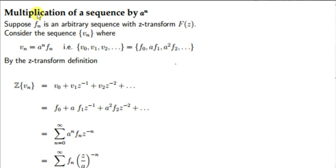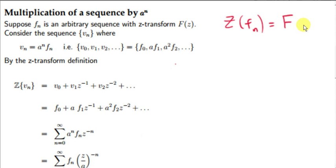The first property of Z-transforms that we will consider is the Z-transform of a sequence that has been multiplied by the sequence a to the power of n — the geometric sequence that we saw in previous videos. Here, f sub n is an arbitrary sequence, and its Z-transform can be written as F of z. We will multiply f sub n by a to the power of n to form the new sequence v sub n.